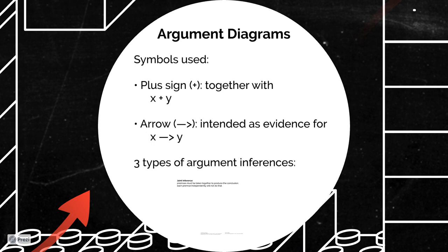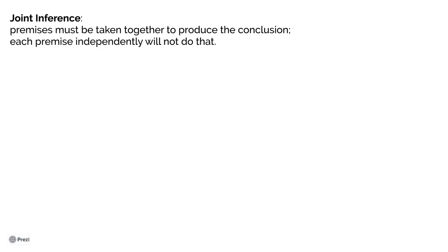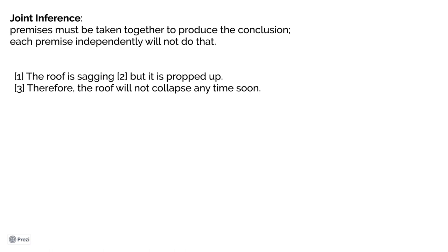The sentence form diagram also uses a plus symbol to signal that two things are meant to be taken together. It may be the case that X alone cannot indicate Z, and Y alone does not indicate Z, yet X and Y taken together can give you the conclusion Z. There are three types of argument inferences we need to understand in order to diagram. The first is a joint inference, because the premises must be taken together in order to produce the conclusion — each premise independently cannot do that. X plus Y leads to Z; X alone does not lead to Z, and Y alone does not lead to Z.